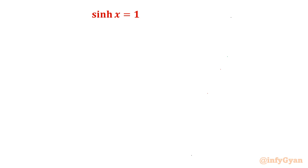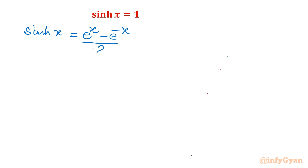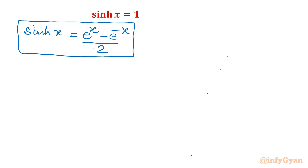I will begin with the general formula we use to write sinh(x). This is called an expression with exponentiation: sinh(x) = (e^x - e^(-x)) / 2. This is a very important formula.